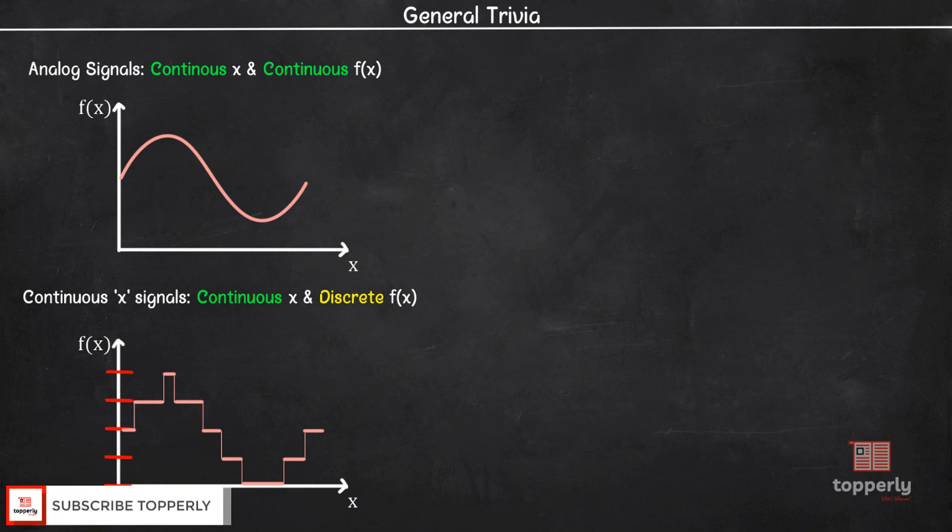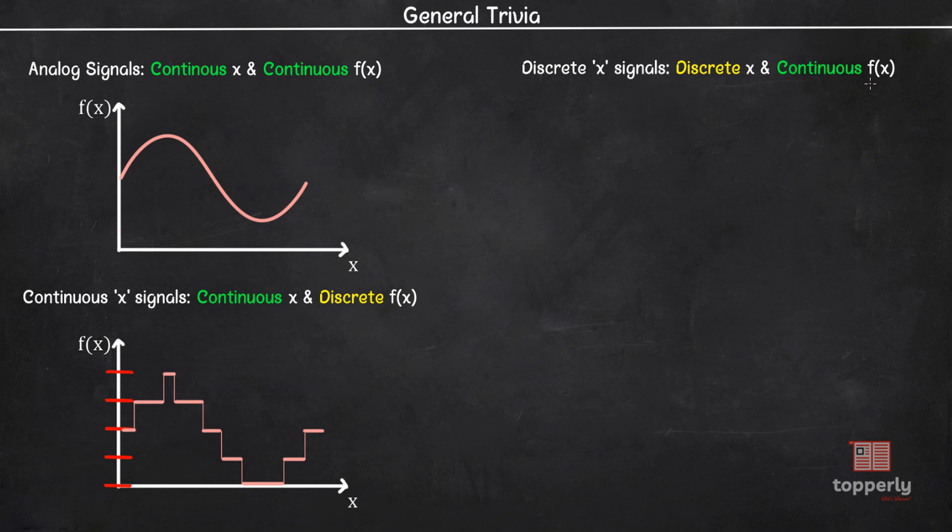Next we have discrete x signals. Here the variable x is discrete but we have continuous f. The graph of a typical discrete x signal looks like this.